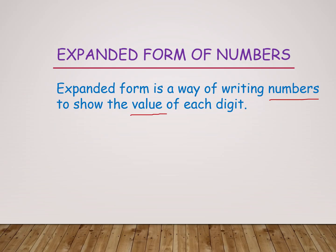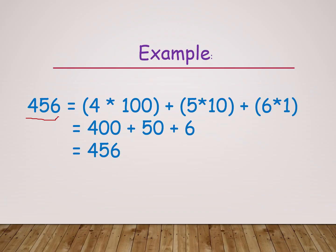Like place values, here are the example. Here I am taking 456 number. 4 in 100s place, 5 in 10s place, 6 in 1s place. Here we multiply the number with its place value. 4 into 100 is 400, 5 into 10 is 50, 6 into 1 is 6. Total 456.